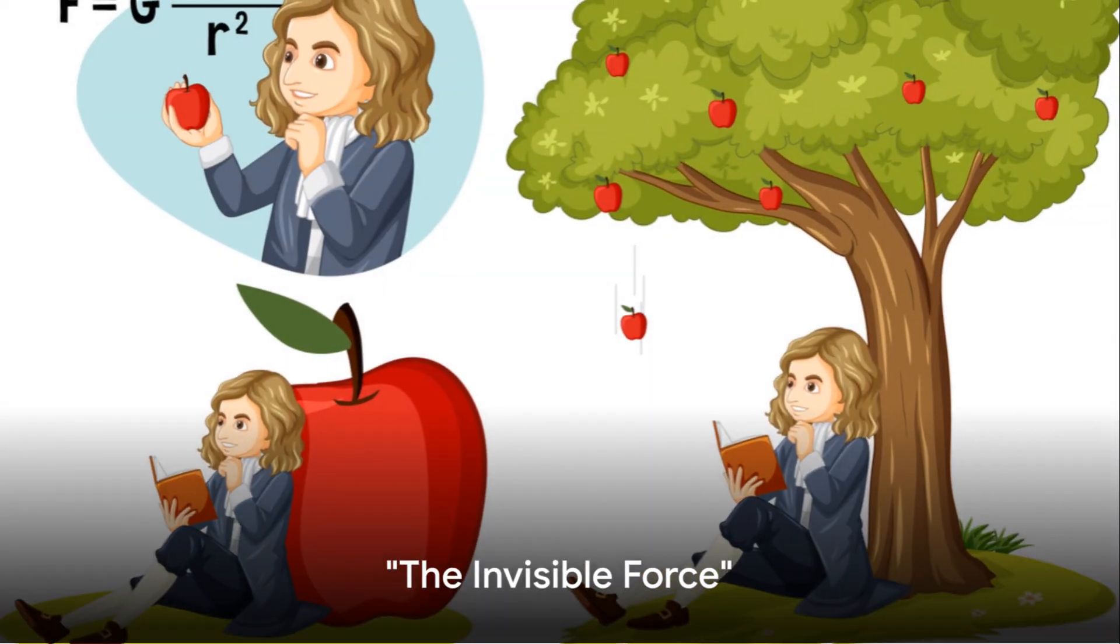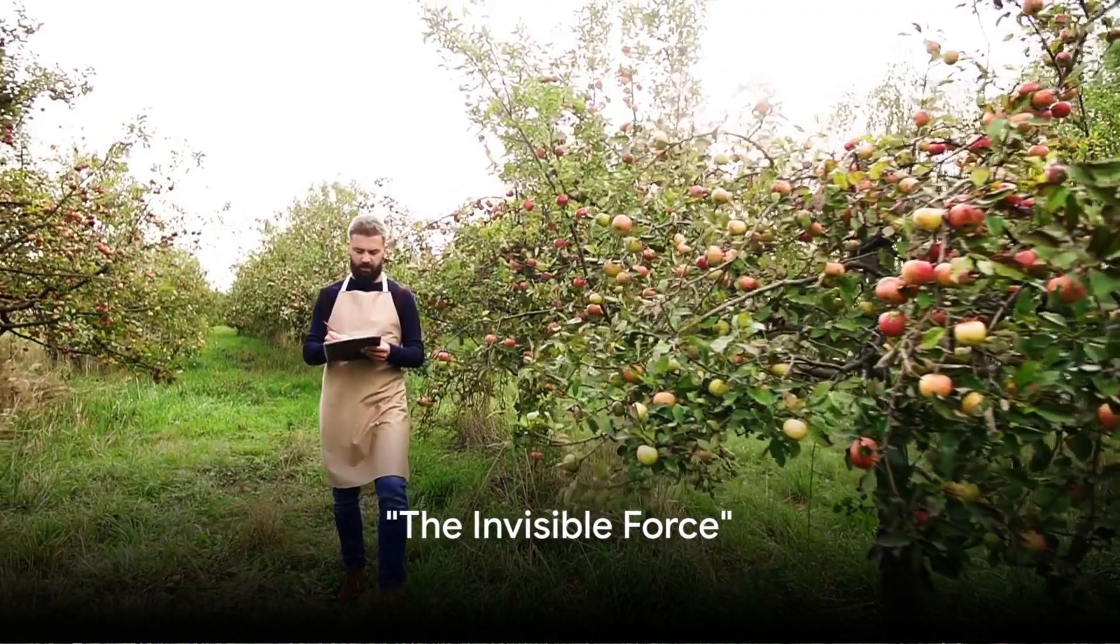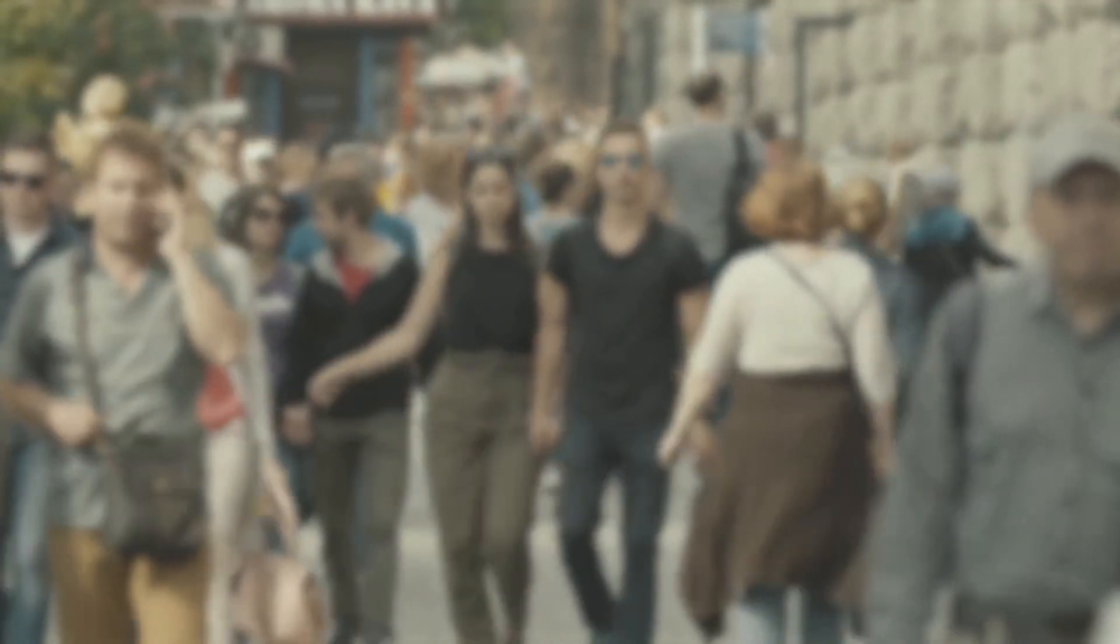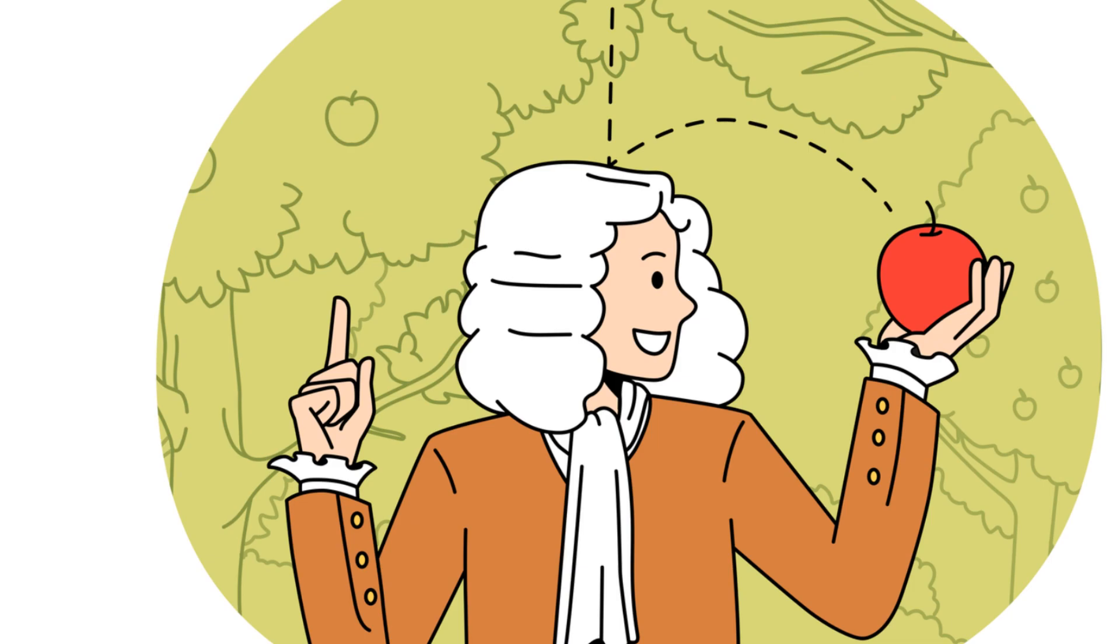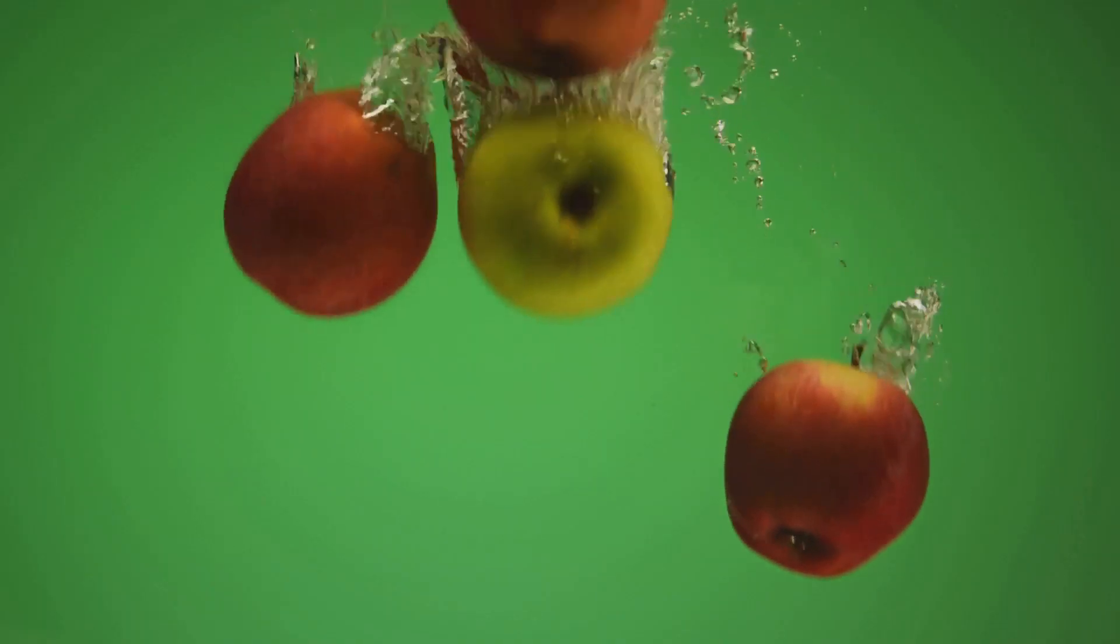Have you ever wondered why things fall to the ground? Why we're not floating around like astronauts on Earth? Let's delve into a story that unfolds in the 17th century. A story that revolves around an apple and a man named Sir Isaac Newton. Yes, the tale of the apple falling from the tree, a seemingly simple occurrence that sparked a thought in the brilliant mind of Newton.